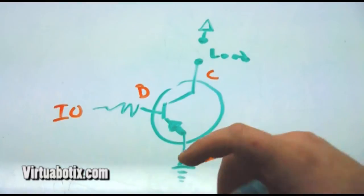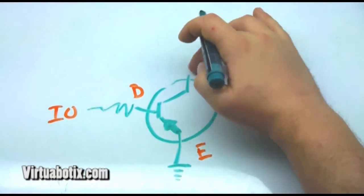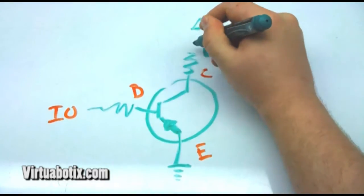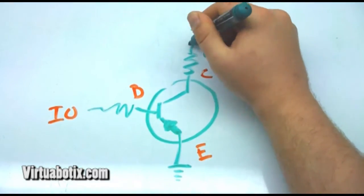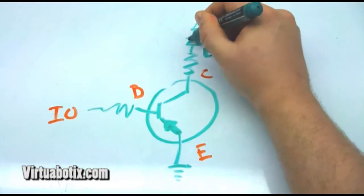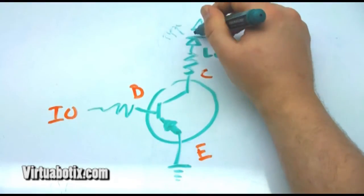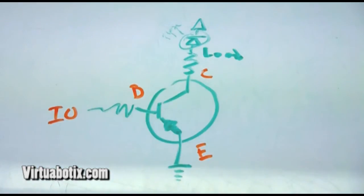And of course, what our load was, was a resistor and a light emitting diode. So let's draw that back in. Okay, so that is the proper way to set this up.